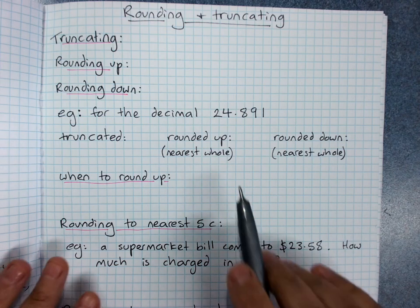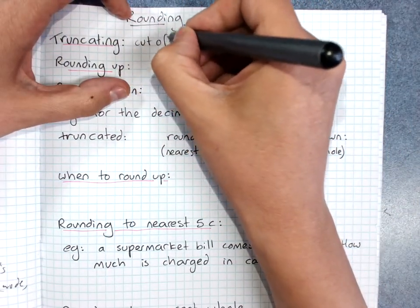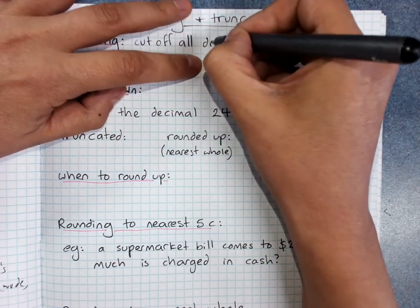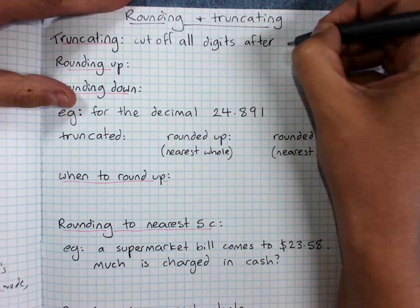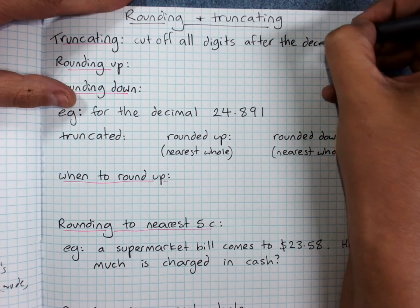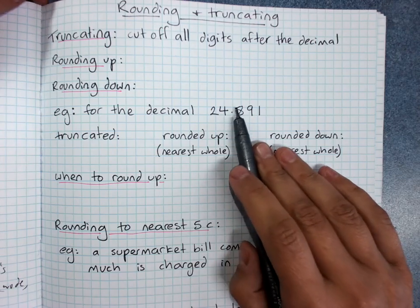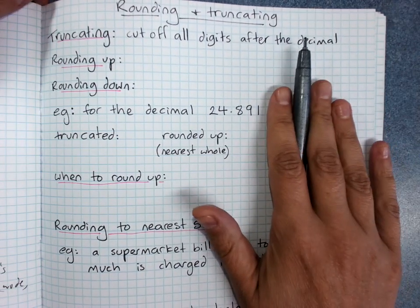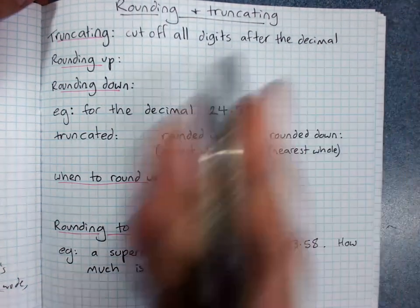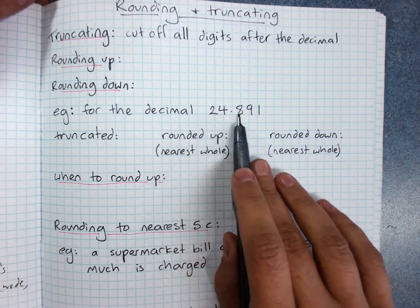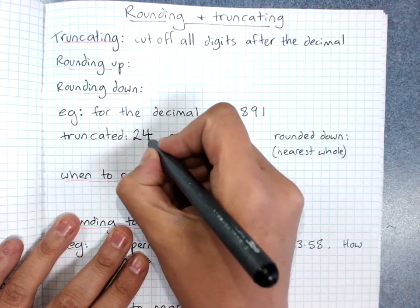Truncating is just chopping off the decimal — cut off all the digits after the decimal. That might be useful sometimes in tax situations if we're calculating GST; a business can just ignore all the cents and calculate on dollars. So if I was truncating 24.891, I'd just cut off all of those and write 24. It's truncated.